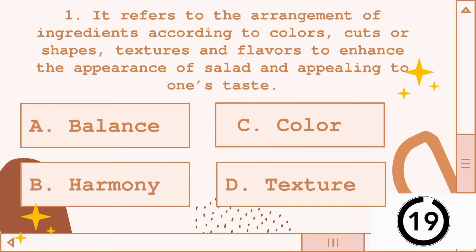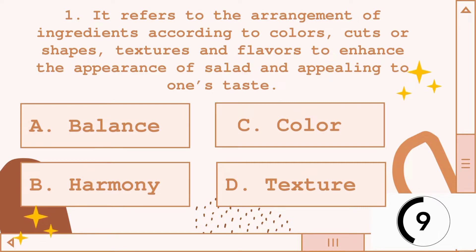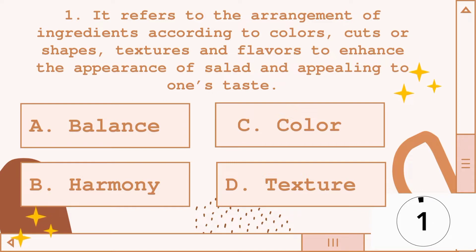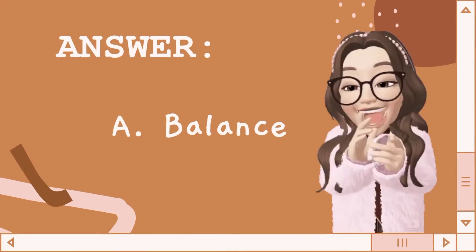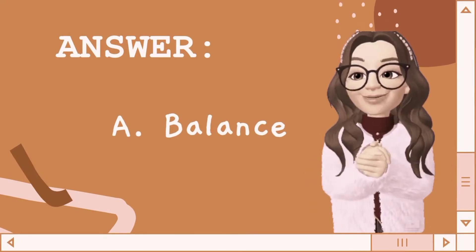Number 1. It refers to the arrangement of ingredients according to colors, cuts or shapes, textures and flavor to enhance the appearance of salad and appealing to one's taste. A. Balance, B. Harmony, C. Color, D. Texture. Answer: A. Balance.